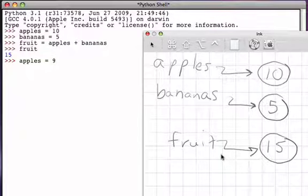So if I perform an assignment statement, apples refers to the value or the data value, data object 9, we know that the number of fruit total is now 14. But if I look at the value of fruit, it's still 15. Why would that be?